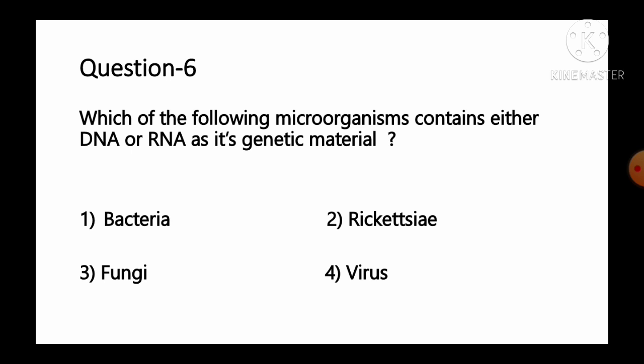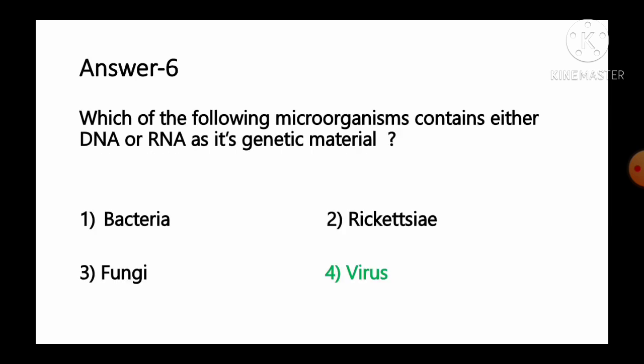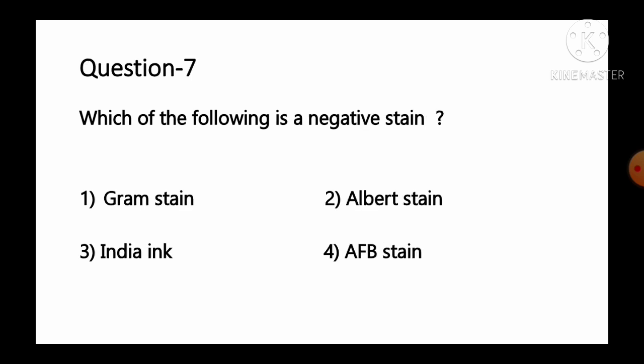Question number 6: Which of the following microorganism contains either DNA or RNA as its genetic material? Options: 1 bacteria, 2 Rickettsia, 3 fungi, 4 virus. A virus is a small collection of genetic code — either DNA or RNA — surrounded by a protein coat. A virus cannot replicate alone; it must infect a cell and use components of the host cell to make copies of itself. So option number 4, virus, is the correct answer.